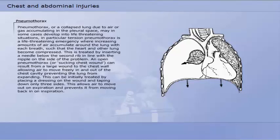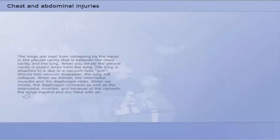An open pneumothorax can result from a large wound to the chest wall, allowing air to move freely in and out of the chest cavity, preventing the lung from expanding. This can be initially treated by placing a dressing on the wound and taping down only three sides. This allows the air to move out on expiration and prevents it from moving back in on inspiration.